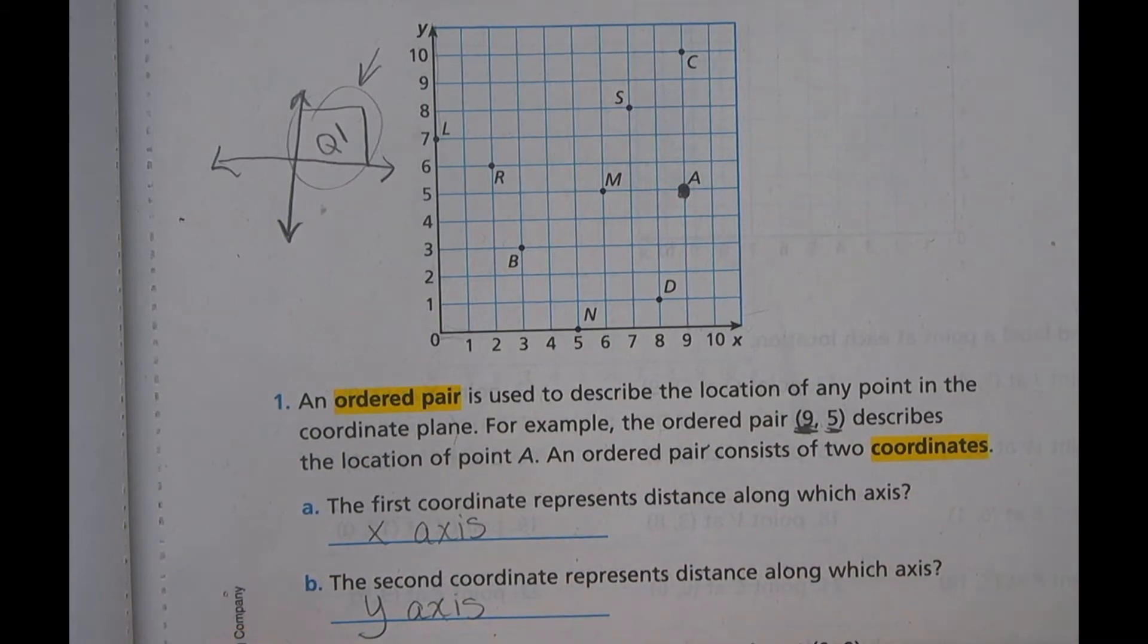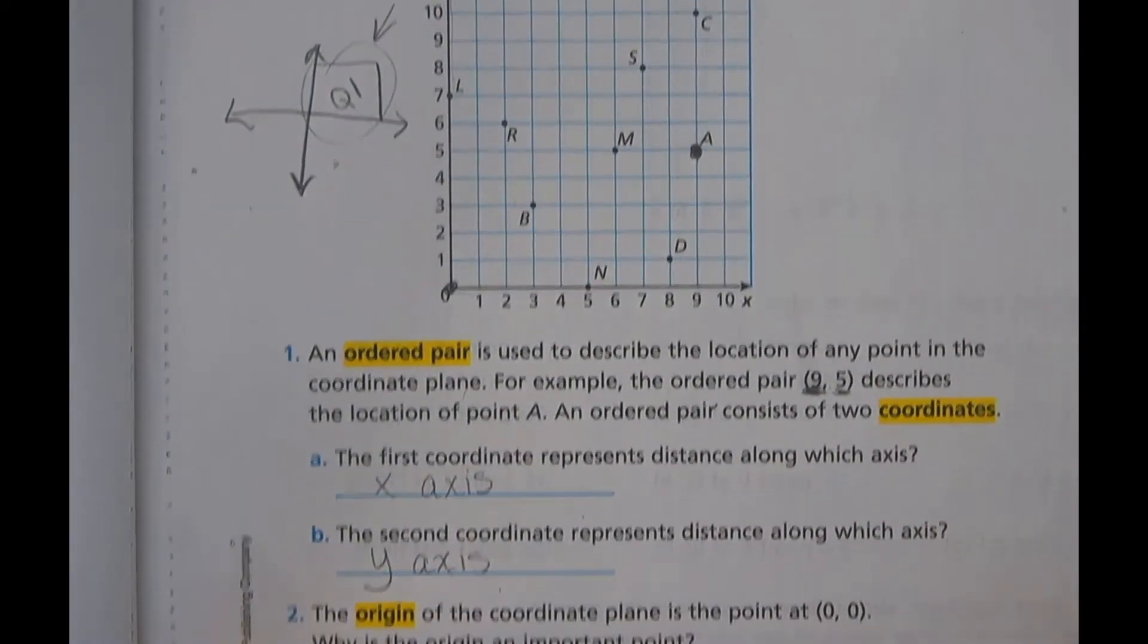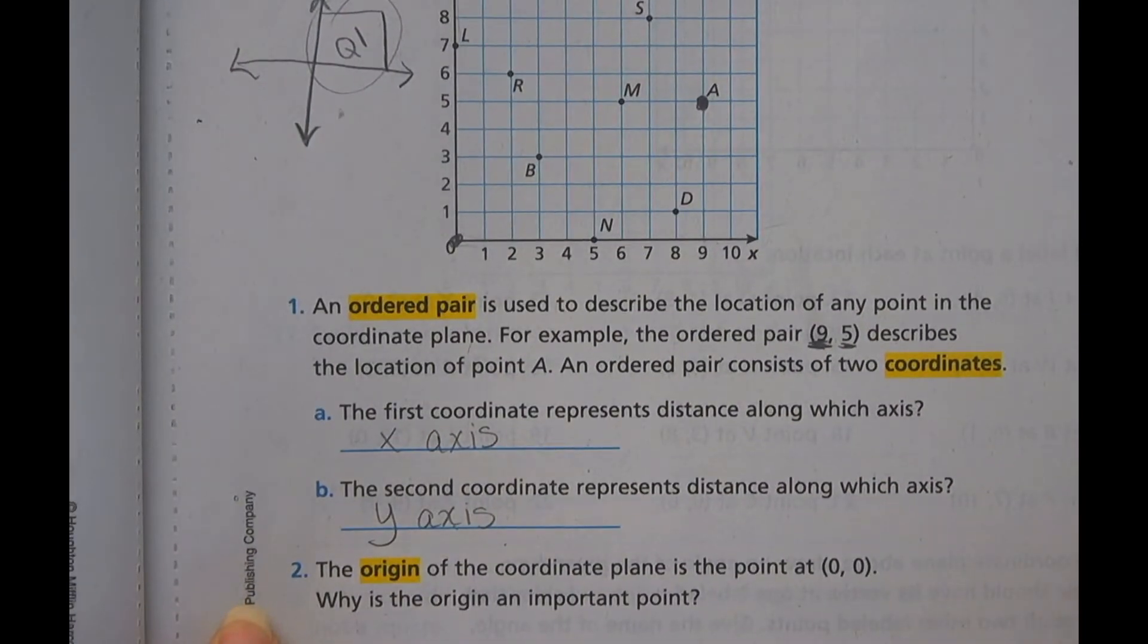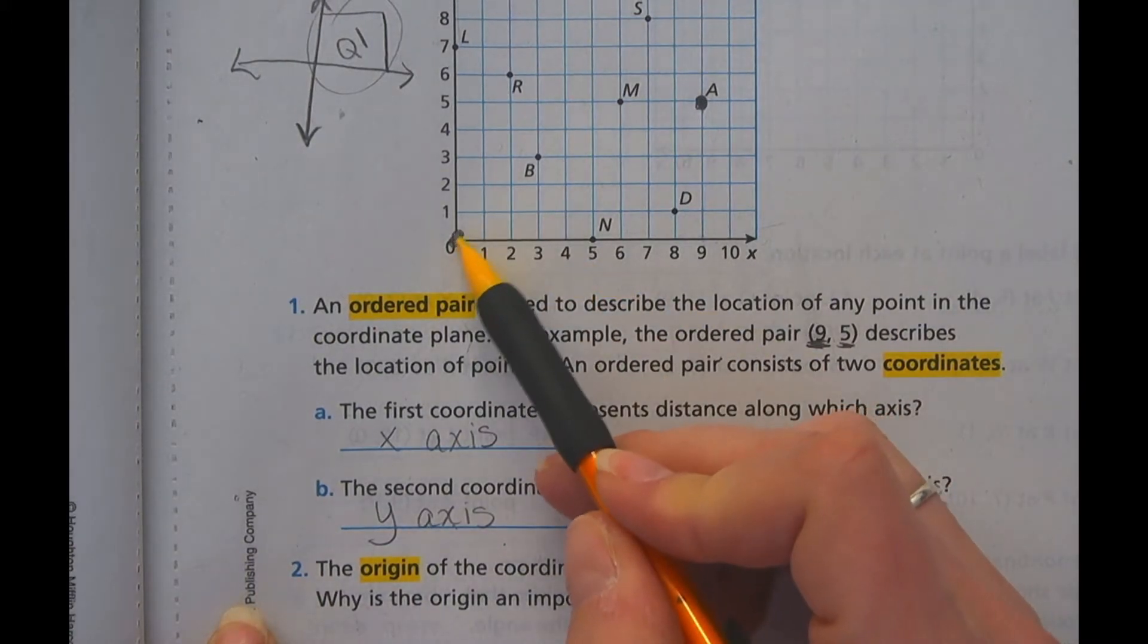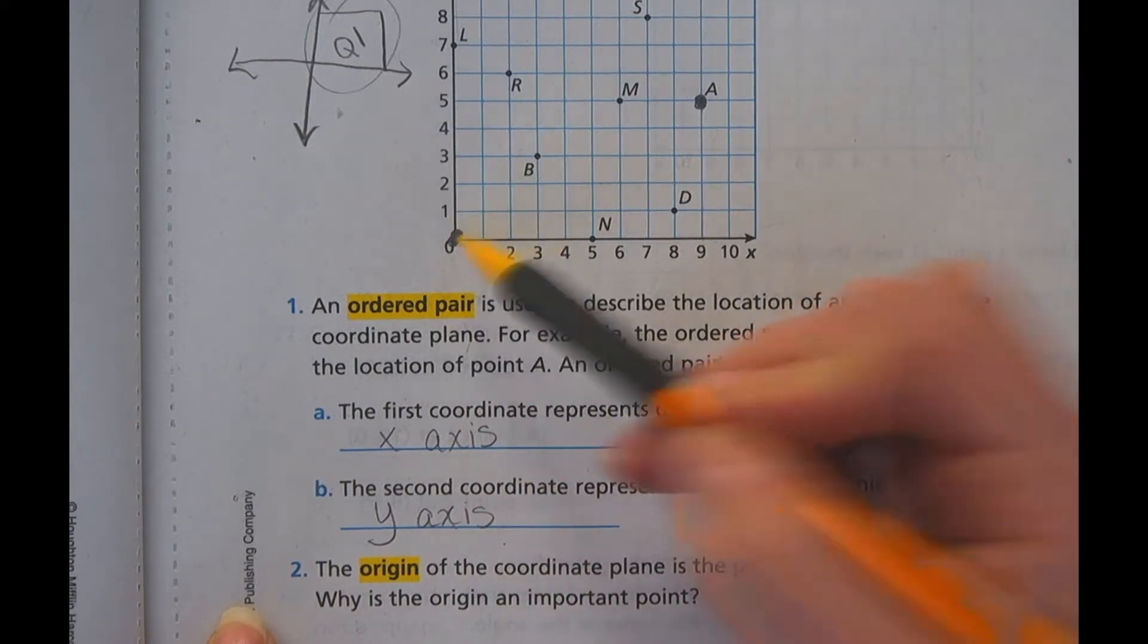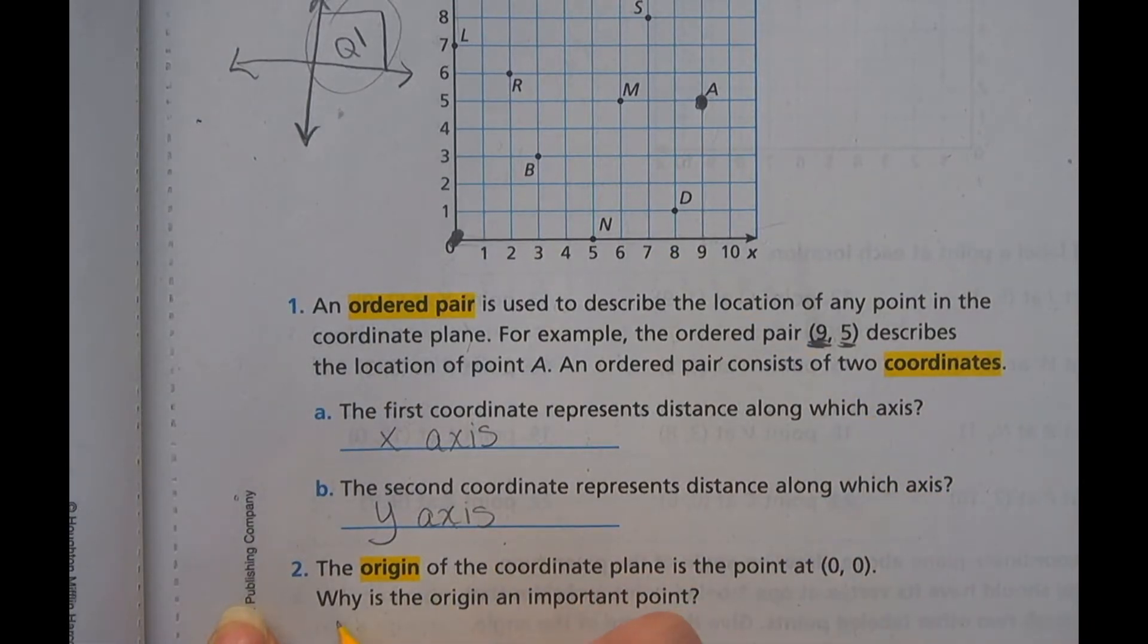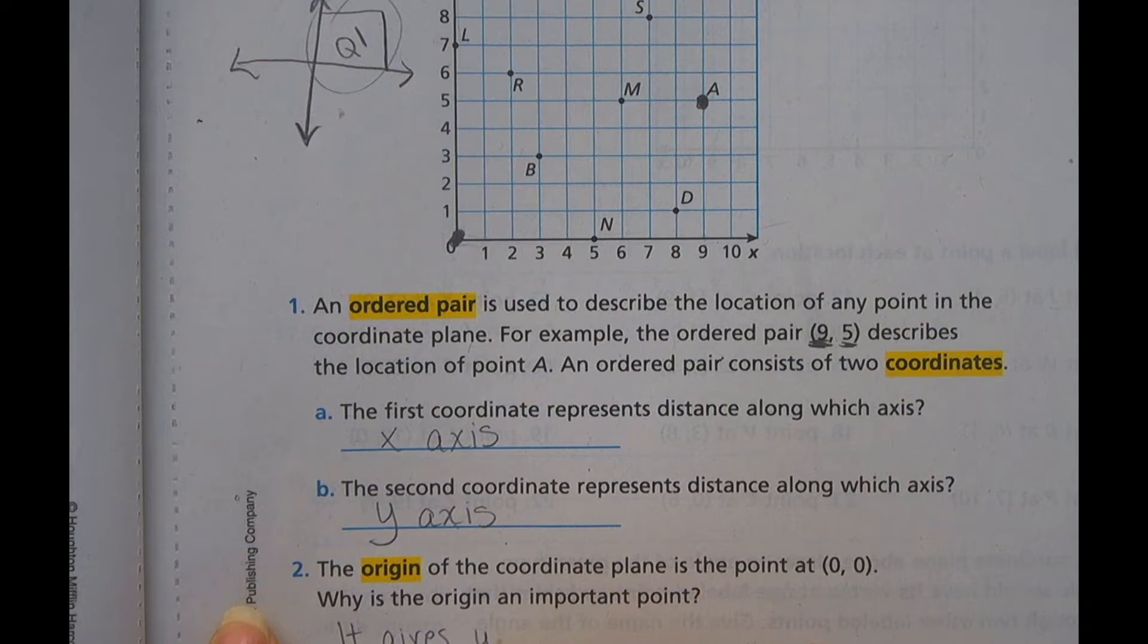The origin of the coordinate plane is the point (0, 0). So this point right here. So the question here is why is it important to know that? And really it's important to know that because it gives us our starting point. This tells us where the very beginning is. If it said to put a point on (0, 0), this is where it would be. It's talking about the origin. So why is it important? It gives us a place to start, or a starting point.